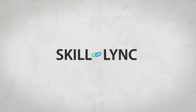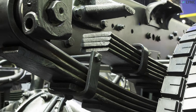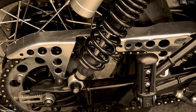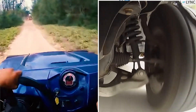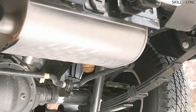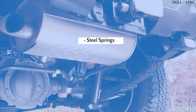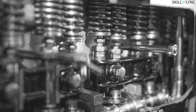Welcome to Skill Link. Most of you would have seen these types of springs on vehicles — these springs are an important part of the suspension system. In a previous video we spoke about the suspension system; have a look, the link is in the description below. These springs are classified into different types: steel springs, rubber springs, air springs, and plastic springs. In today's video we'll be discussing steel springs.